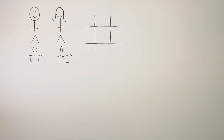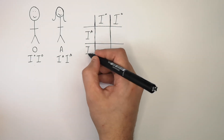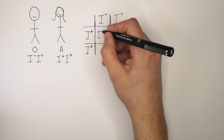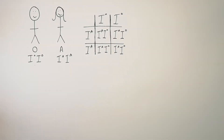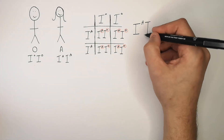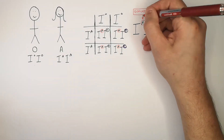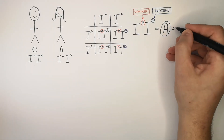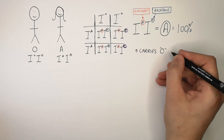Now consider a person with blood group O — they can only have the genotype IO, IO — who has a child with a woman with blood group A and genotype IA, IA. The possible gametes for the man are IO, IO, and for the woman IA, IA. All possible genotypes of their children are IA, IO — giving a 100% chance of having a child heterozygous for IA, IO, which gives them blood group A because A is dominant over the recessive O. Importantly, the person with genotype IA, IO now carries the O allele.